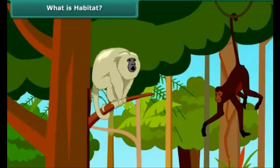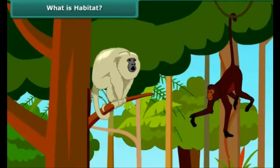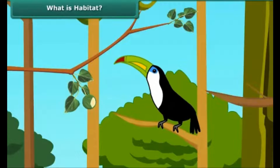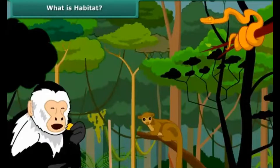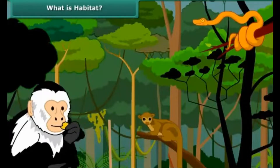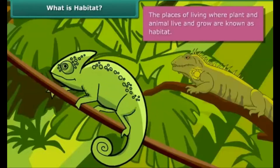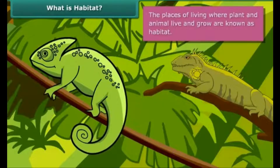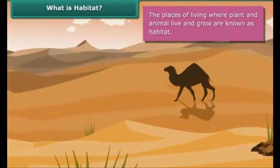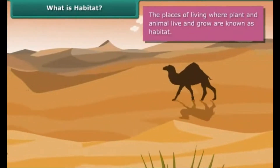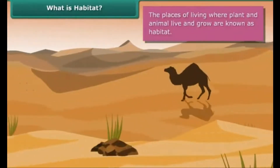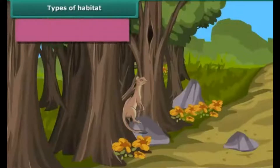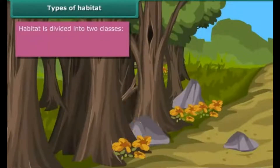We all know that every organism requires some place where its basic necessities like food, water, and shelter should be met. This place of living where plants and animals live and grow is known as habitat. All living organisms should adapt themselves to their habitat to thrive and survive in the surroundings. Habitat is divided into two classes.